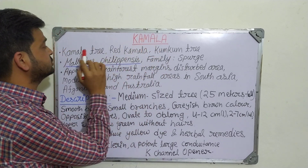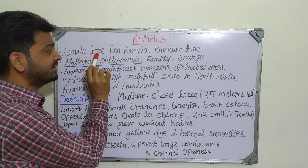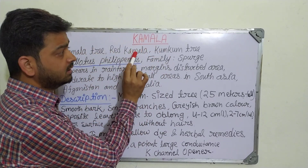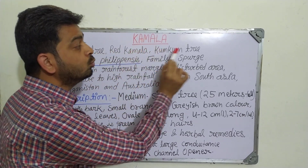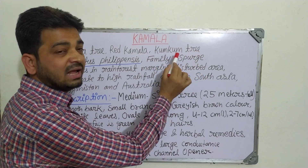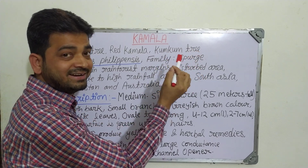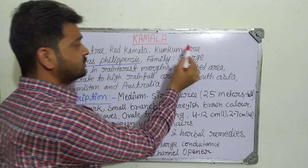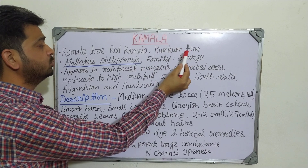Kamala is also known as a Kamala tree, red Kamala, or Kumkum tree. Because of its Kumkum-like nature, a red kind of dye can be obtained from it — that's why it is called a Kumkum tree.